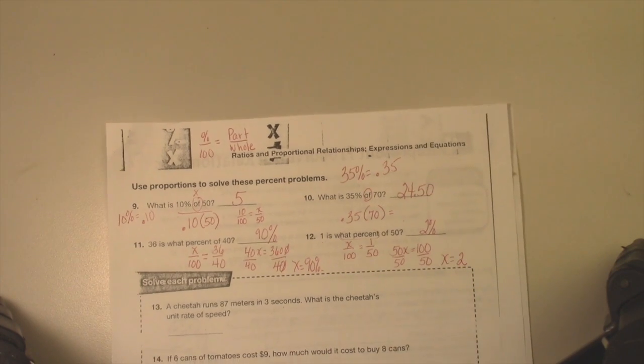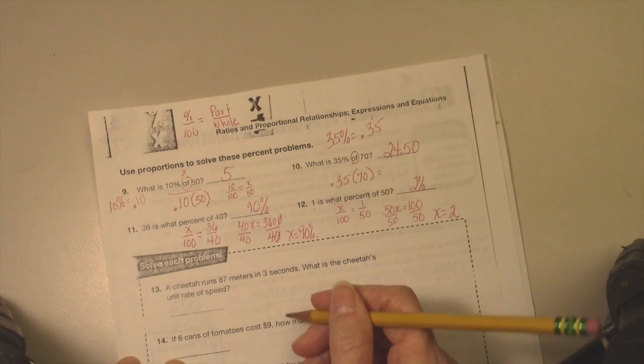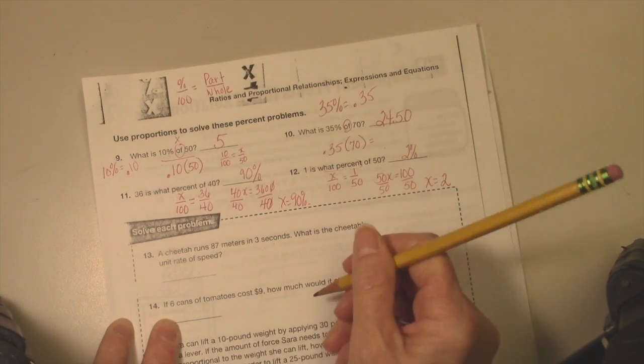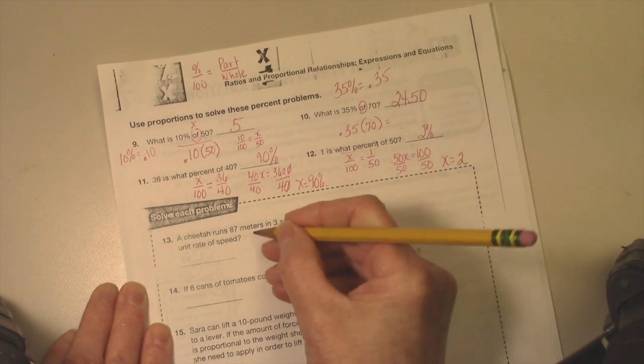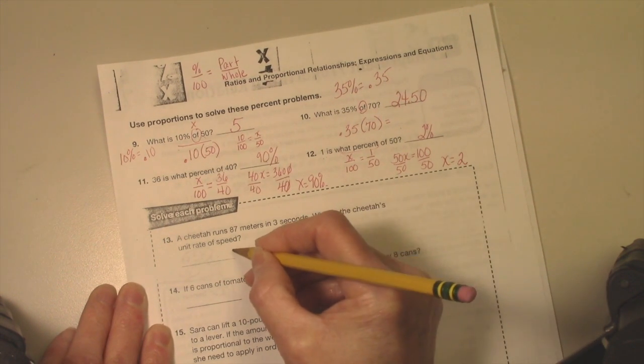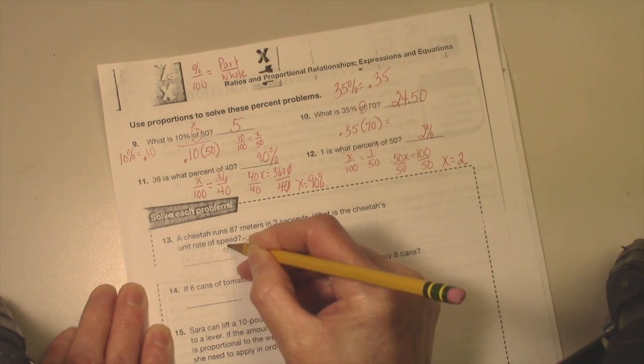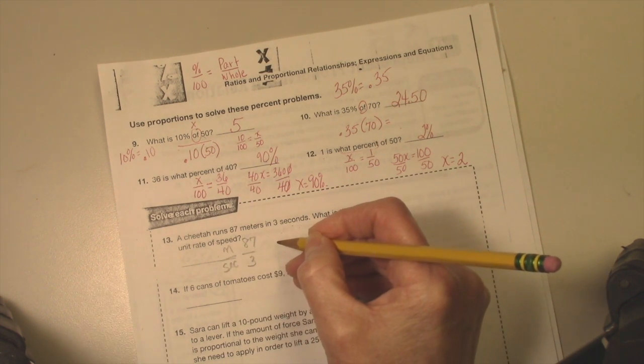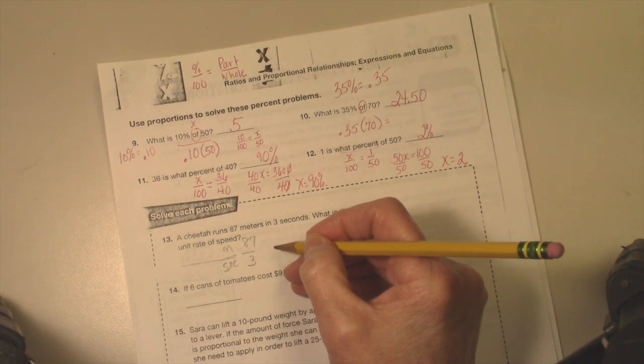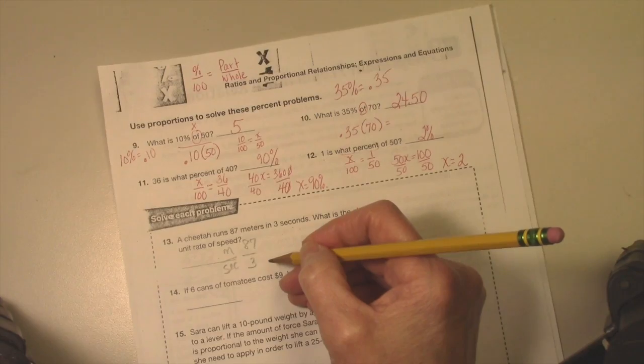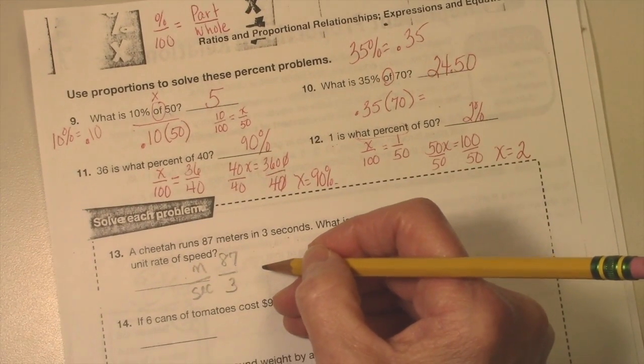Okay, let's do some of these. Hopefully you tried them. A cheetah runs 87 meters in three seconds. What is the cheetah's unit rate of speed? So it's meters per second. 87 over 3 meters per second, right? Set it up. Meters per second, make sure you can see this.